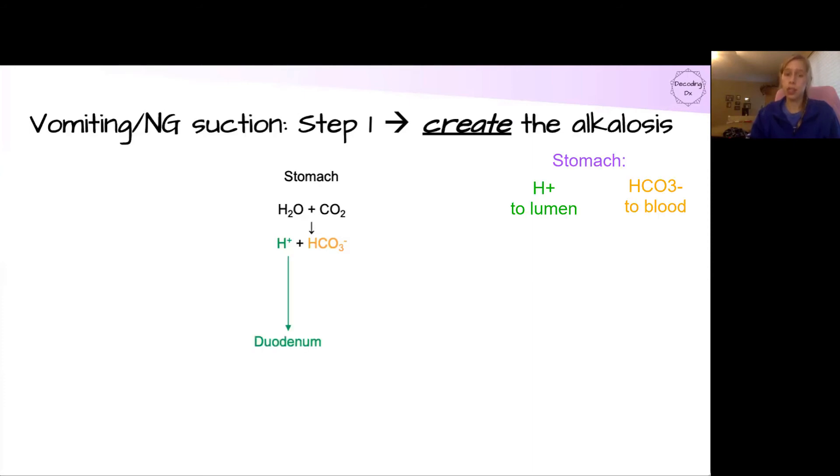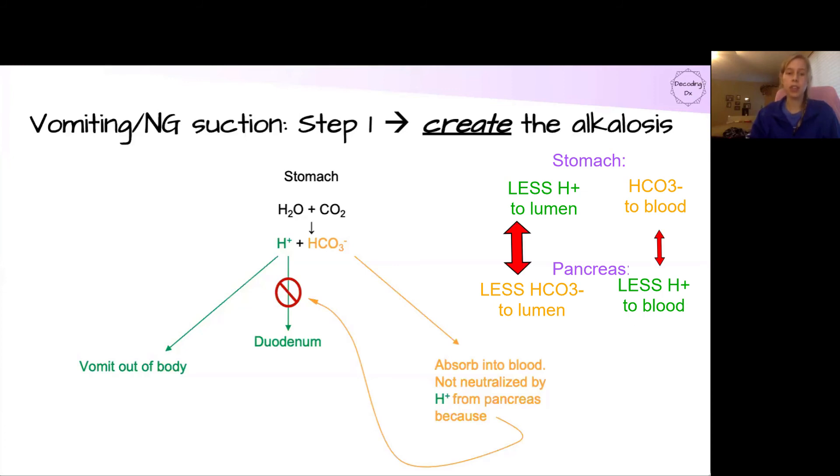Normally, this would go to the duodenum, but instead, in the case of vomiting and NG suction, some of that free hydrogen is lost out of the body.